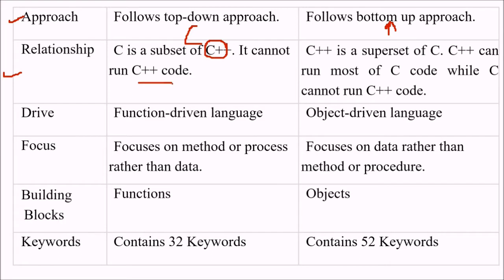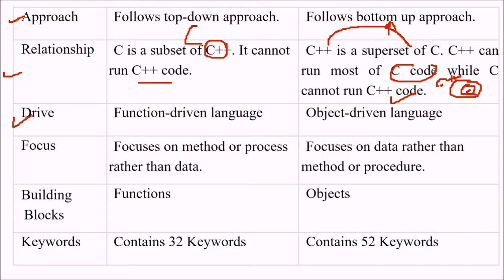C is a subset of C++ and cannot run C++ code, while C++ is a superset of C. C++ can run most of the C code, while C may not be able to run C++ code. C is a function-driven language, while the main idea in C++ is the object, so it is an object-driven language.